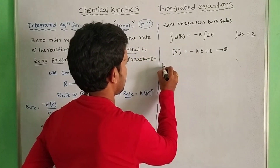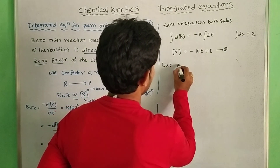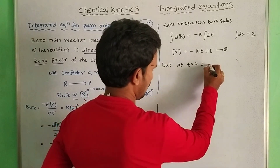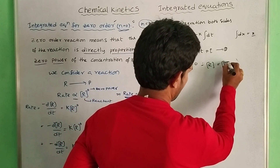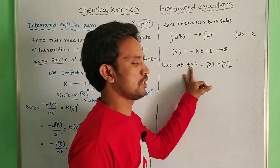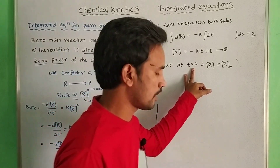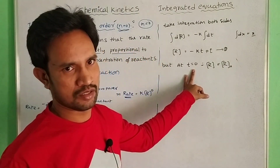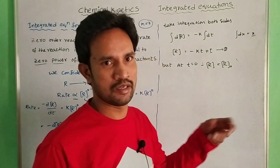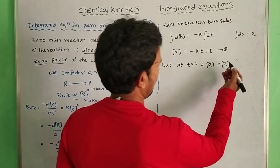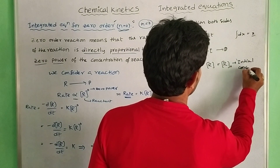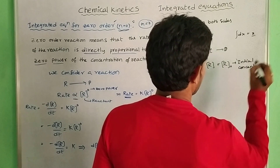But at t equal to 0, then R equals R naught. Because t equal to 0 means the reaction has not started. So the concentration of the reactant is equal to the initial concentration, that is R naught.